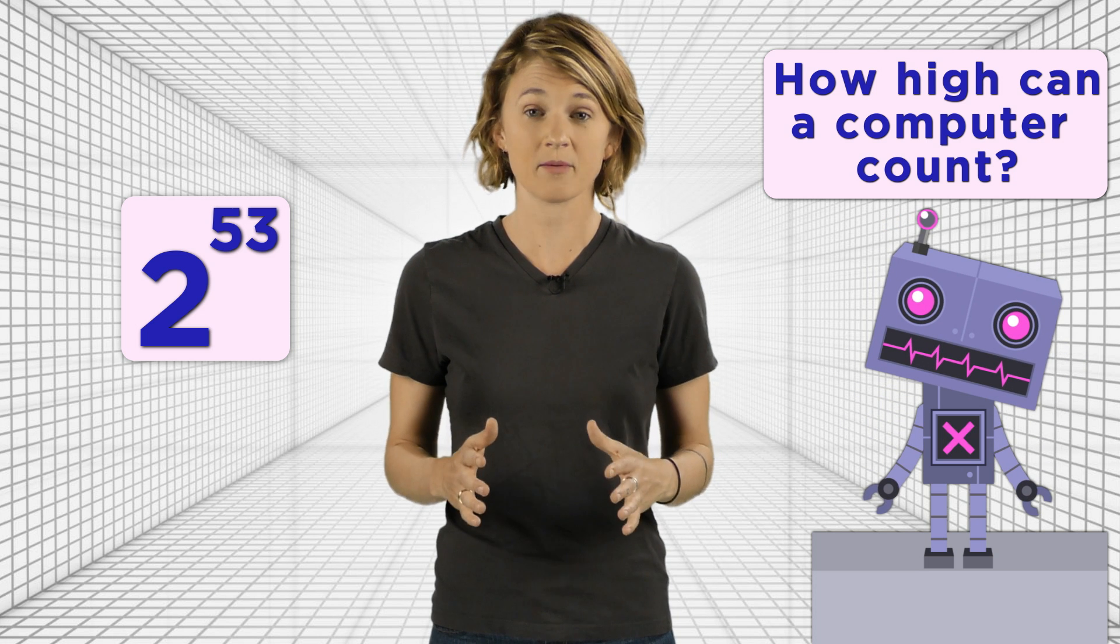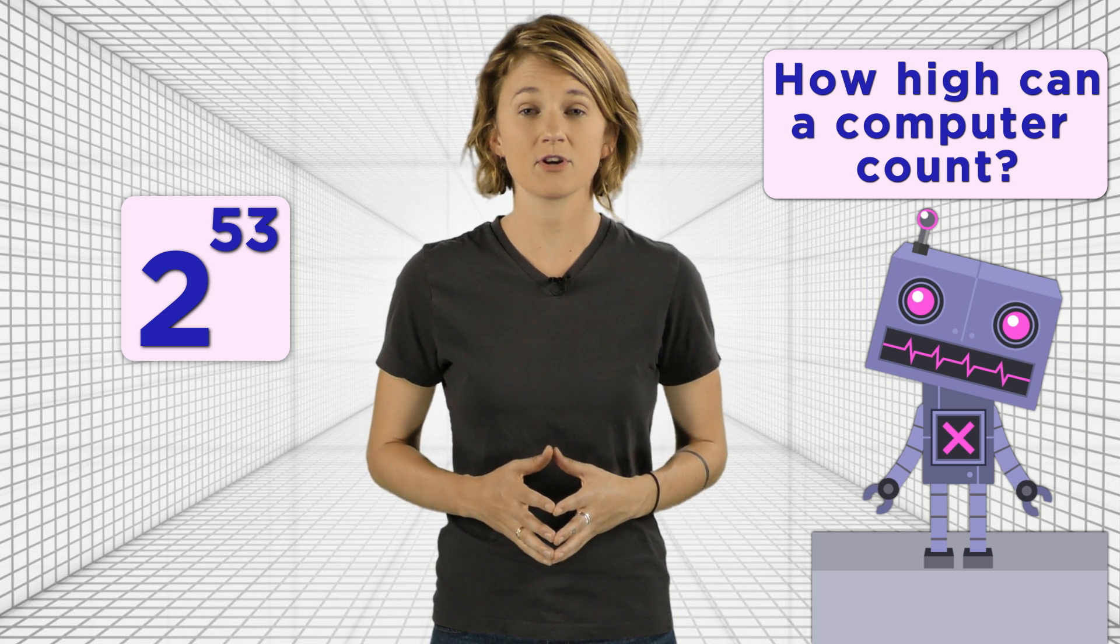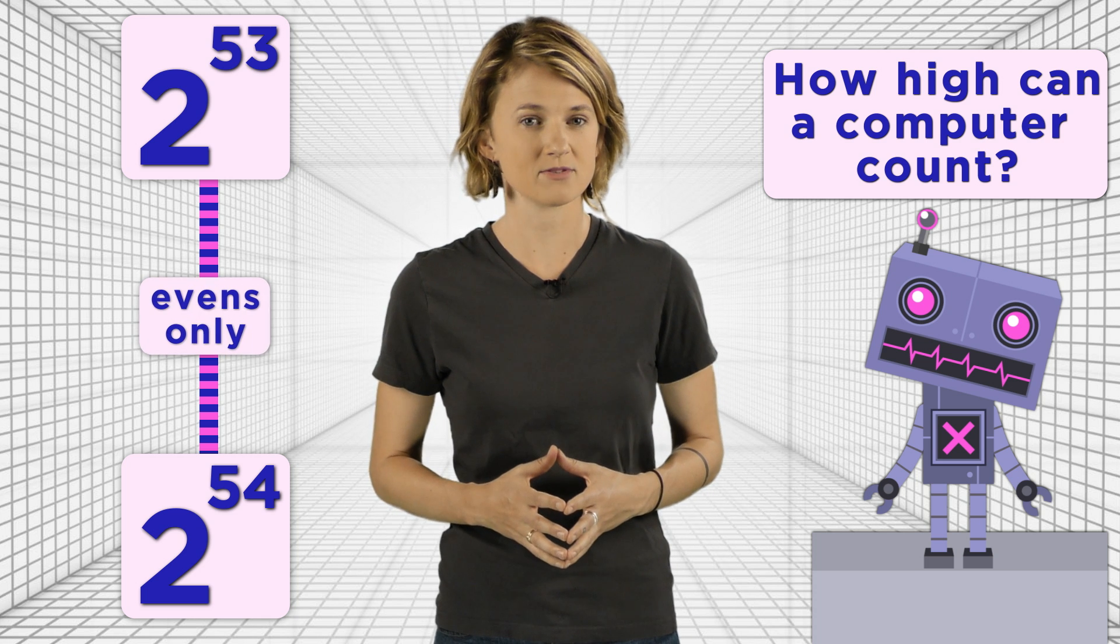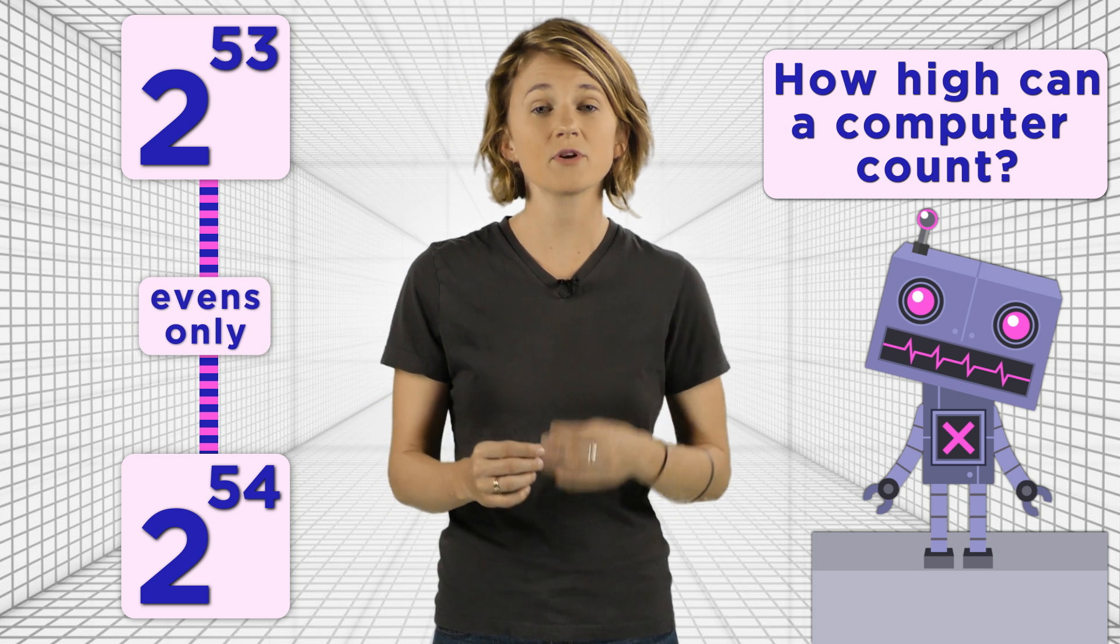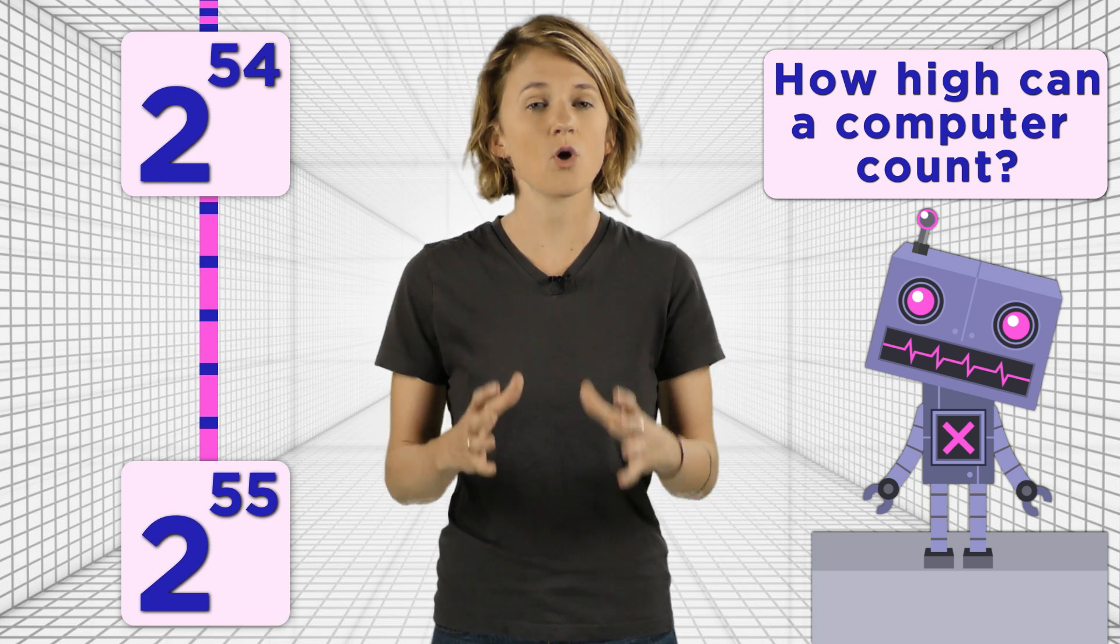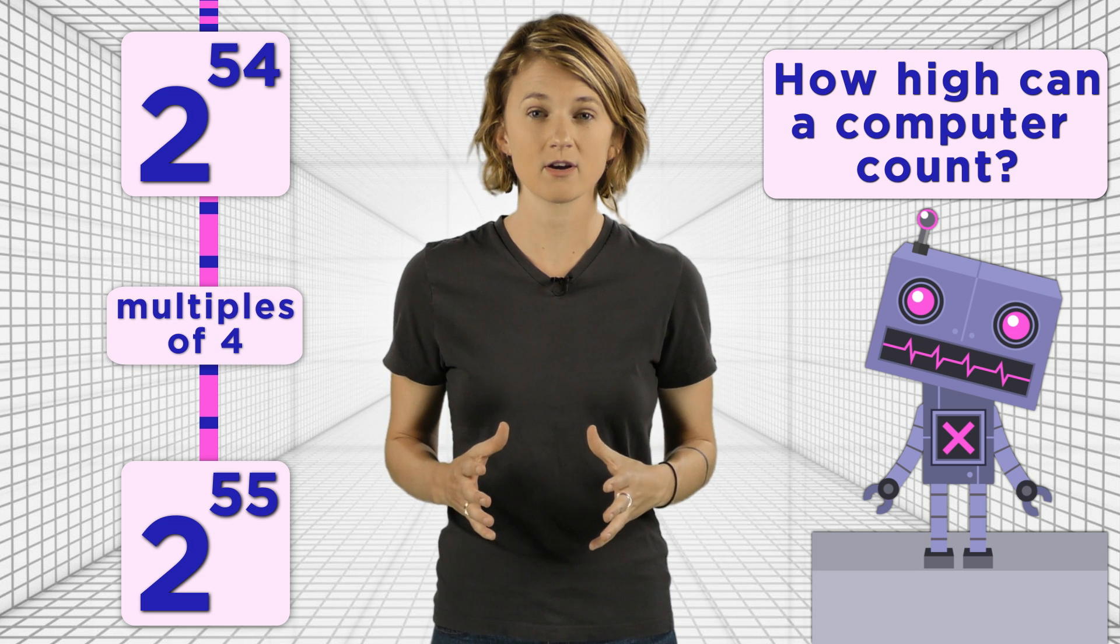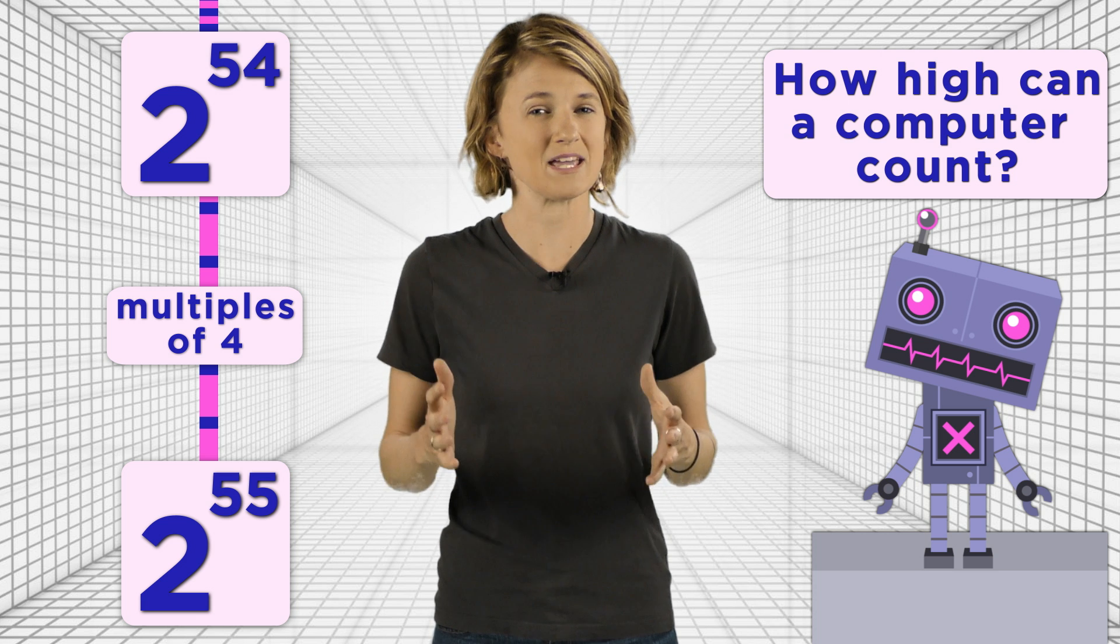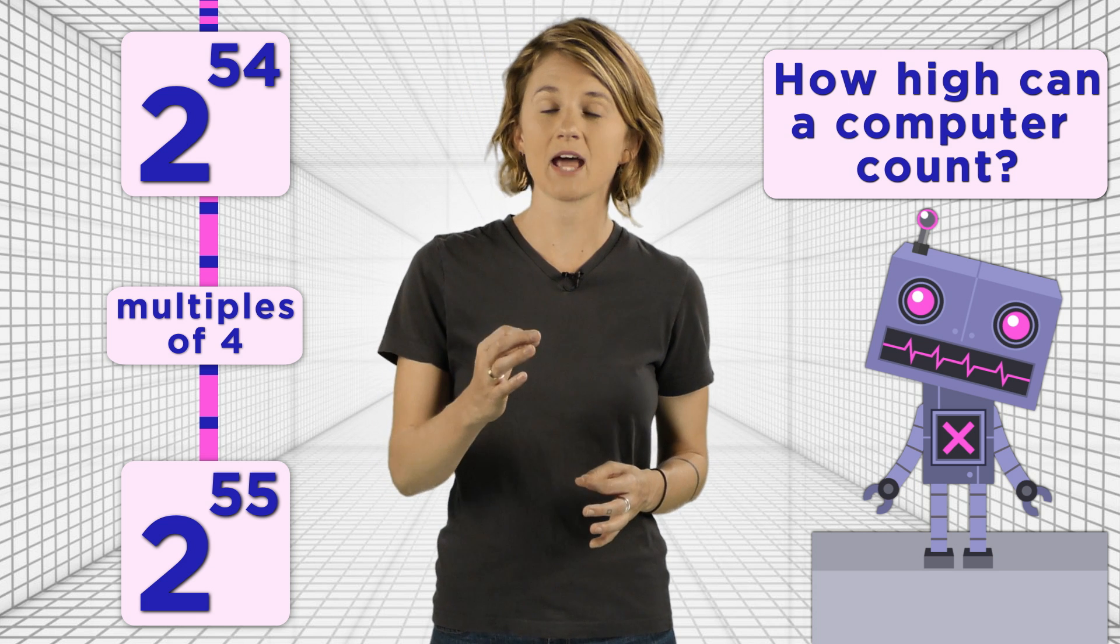After that, it starts skipping numbers. Between 2 to the 53rd and 2 to the 54th, it can only represent the even numbers. Between 2 to the 54th and 2 to the 55th, it can only represent the multiples of 4. The numbers a computer knows about are becoming more and more spaced out as they get bigger.